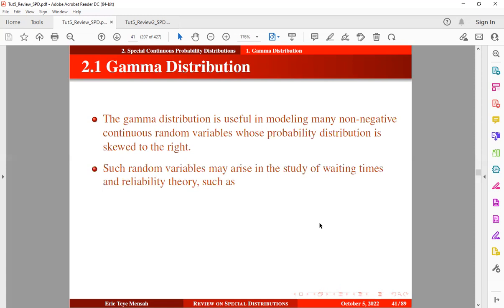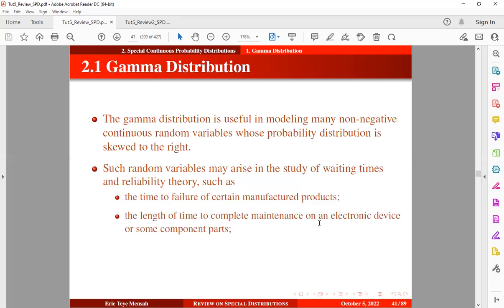Such random variables may arise in the study of waiting times and reliability theory, such as the time to failure of certain manufactured products or the length of time to complete maintenance on an electronic device or some component parts or the time to death of a patient with certain disease.